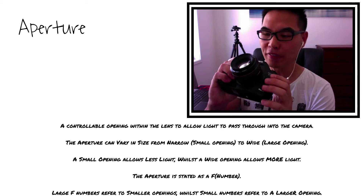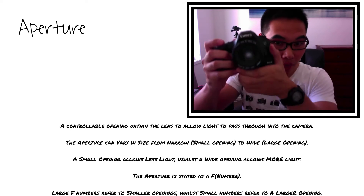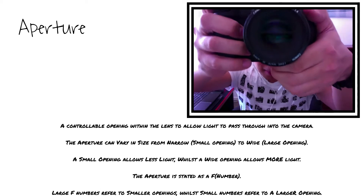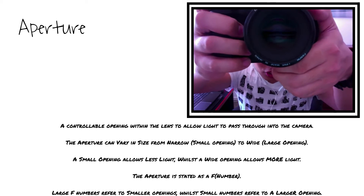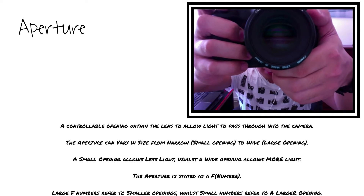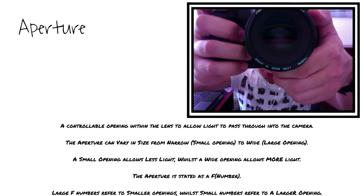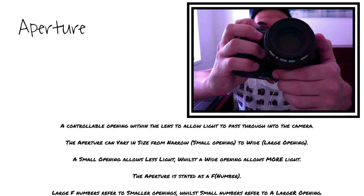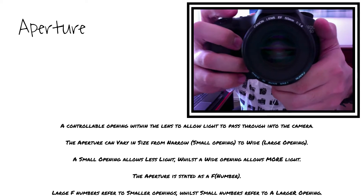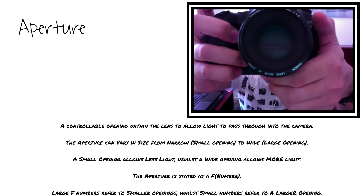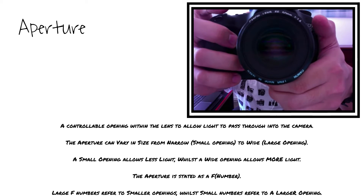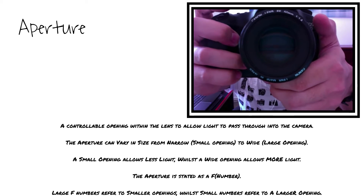I have a 50mm f/1.4 lens here. You're actually looking through the aperture at its wider setting, allowing as much light as possible. I'm going to make it narrower at its most narrow so you can see it. See that little hole? That's the aperture — I've closed it down. Wide, narrow.